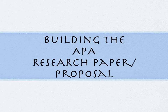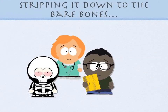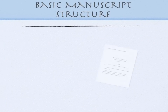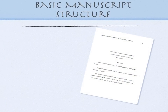Today we're going to look at how to build an APA research proposal. To get a better understanding of how the proposal should look, we need to break it down to the bare bones of a research study by looking ahead a little to what a finished study would look like. So let's start by looking at the major parts of a standard APA research document.